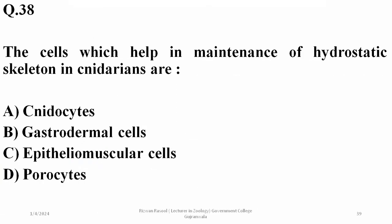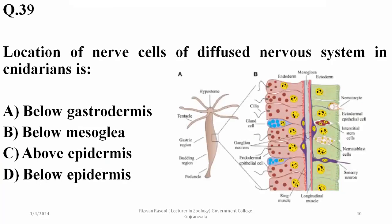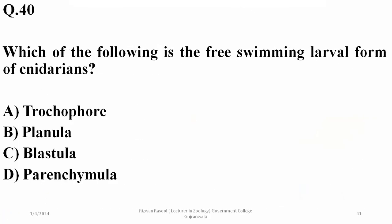The cells that help in maintenance of hydrostatic skeleton are epitheliomuscular cells, which are involved in contraction of the body and development of internal hydrostatic pressure. The location of nerve cells of the diffuse nervous system in cnidarians is just below the epidermis — D is the right option, as ganglion neurons are found just beneath the epidermis of Hydra. The free swimming larval form of cnidarians is planula, so B is correct.